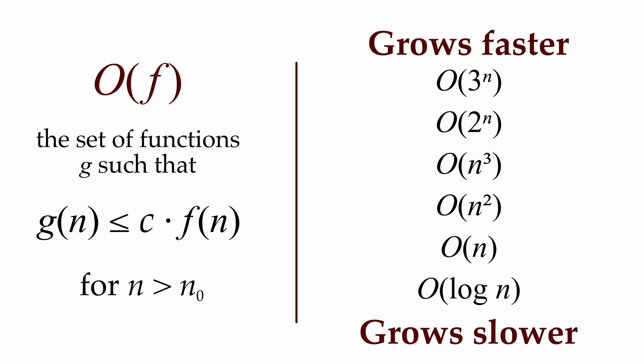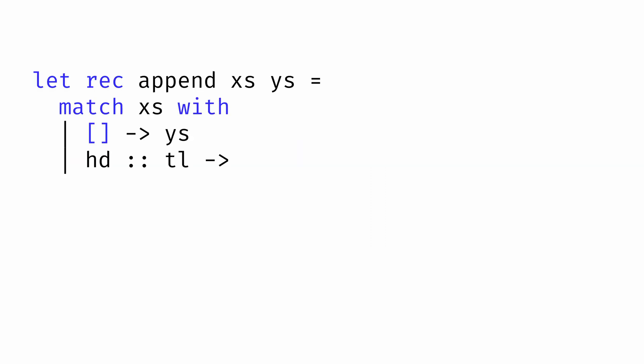In order for big O to be useful to us when analyzing the programs we write, we need some way to take a program and determine what function characterizes the amount of time the program needs. Only then will we be able to determine the big O classification for that function. One method for doing so is to solve recurrence equations. Let's take an example.